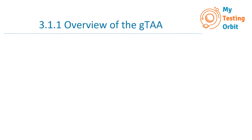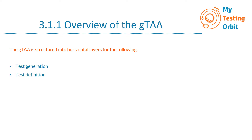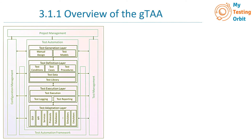When designing and implementing test automation, there are four main layers to consider: test generation, test definition, test execution, and test adaptation. Here we have a diagram taken from the ISTQB syllabus for the Test Automation Engineer certification, which shows test automation with all four horizontal layers, and at the bottom it shows the test automation framework.